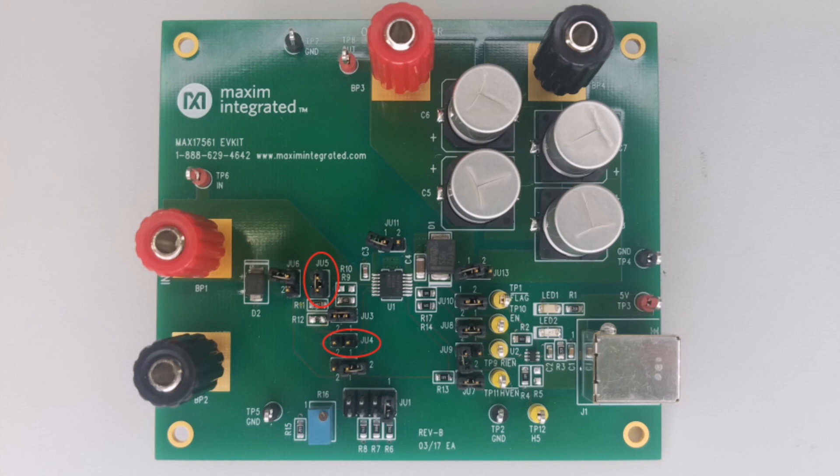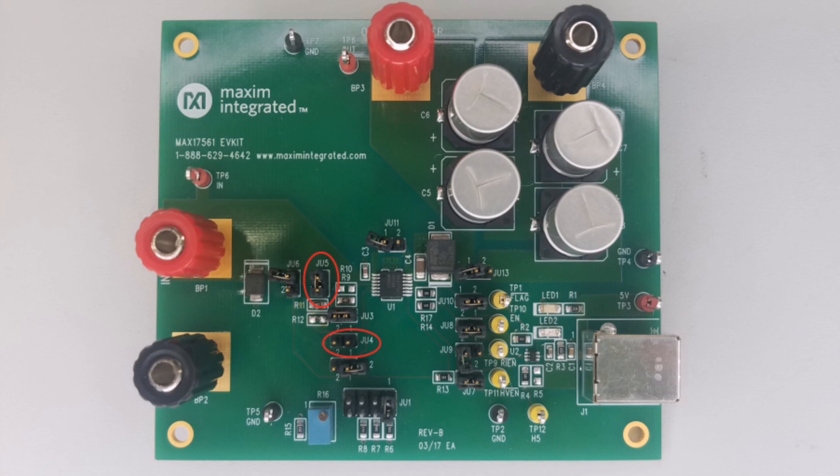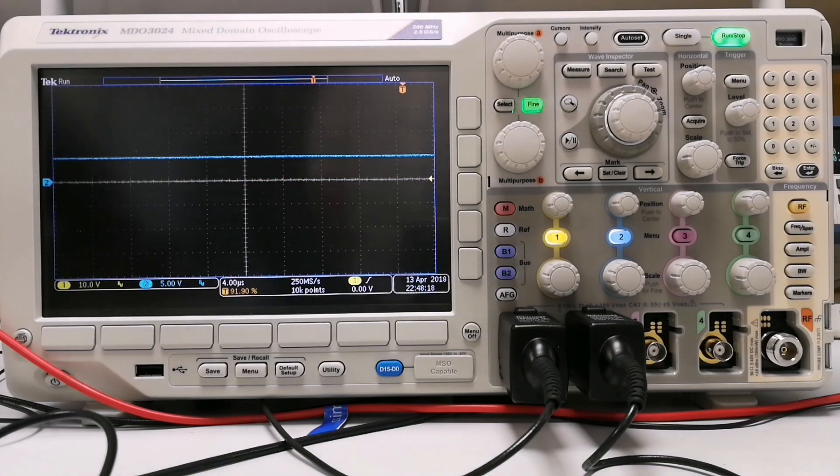Now that the board is completely hooked up I'll increase the supply voltage gradually once more. As the supply voltage approaches 24 volts you can see that the red LED turns on.